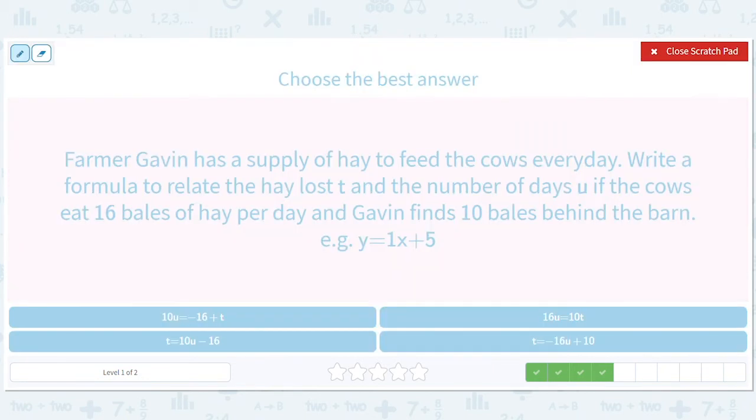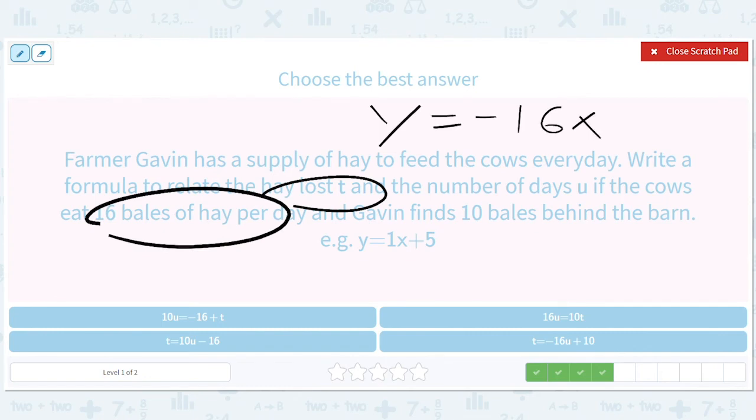So Gavin has a supply of hay to feed the cows every day. Write a formula for the hay lost T and the number of days U. If the cow eats 16 bales of hay per day, so Y equals negative per day slope, negative 16x loses. And he finds 10, so let's say he finds 10. So that's a plus 10. And then you can kind of just tell it's letter equals negative 16 other letter plus 10. So it should be this. T equals negative 16U plus 10.